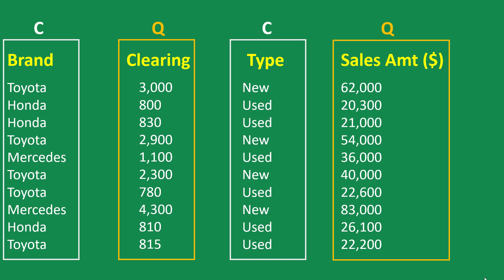Your visuals are always going to be a categorical field plotted against a quantitative field. For example, you might find the total sales by type of car — new cars: 2 million, used cars: 3 million. That's a categorical field against a quantitative field. You could also do total sales by brand — sales is quantitative, brand is categorical.